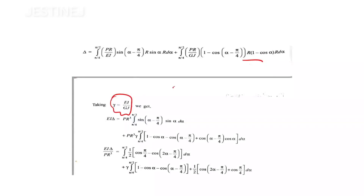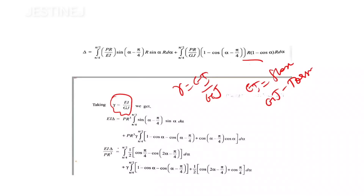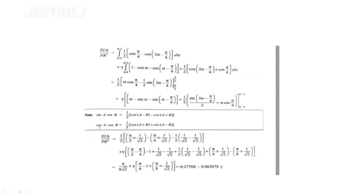We define γ = EI/GJ as a constant representing the ratio of flexural rigidity to torsional rigidity, for ease of calculation. Multiplying through by EI, the EI terms cancel and the torsional term is represented by γ. Factoring out constants, we get PR³ as a common factor in both integrals. We then apply trigonometric product-to-sum identities: sinA·sinB = ½[cos(A-B) - cos(A+B)], and cosA·cosB = ½[cos(A+B) + cos(A-B)].